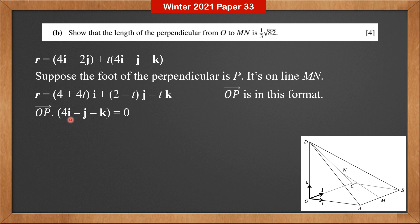we know that OP dot the direction vector 4I minus J minus K is 0. OP is perpendicular to MN. Therefore OP dot the direction vector 4I minus J minus K should be 0 because they're perpendicular. This is 4 times 4 plus 4T minus 2 times 2 minus T plus T. It's equal to 18T plus 14. This should be 0. Therefore T is minus 7 over 9.